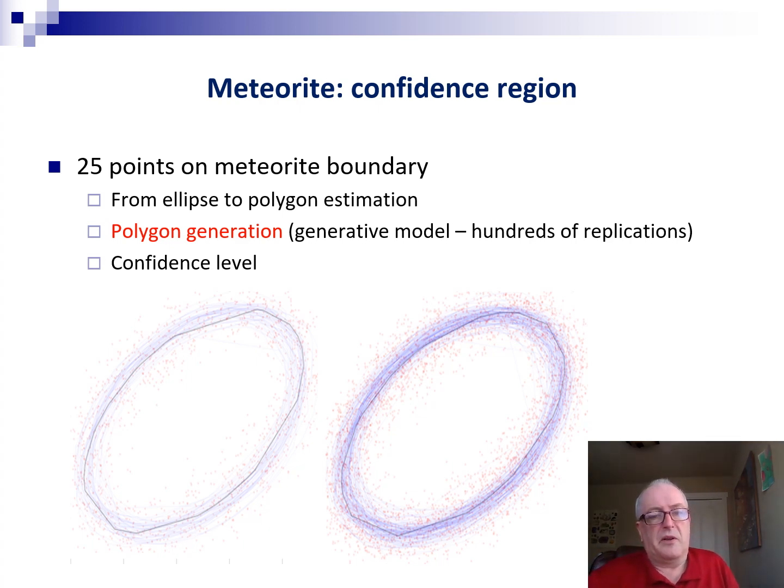And with an ellipse, I'm going to join the points to create a polygon. So we're going to estimate the shape of a meteorite by a polygon. Here it's in two dimensions, but you can generalize to three dimensions.